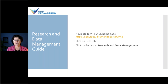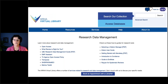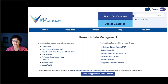To get to our Research and Data Management Guide, navigate from our homepage, click on the Help tab, then click on Guides, and under Guides select Research and Data Management. It's a portal to information about various research data management concepts, agencies, and tools. If you're interested in open access, the first link explains what open access is, the different levels of open access, and how to find open access resources or publish in open access.